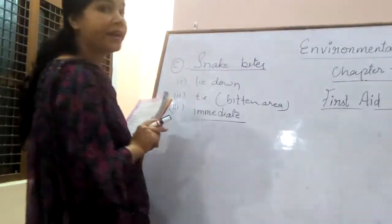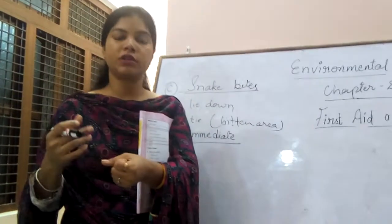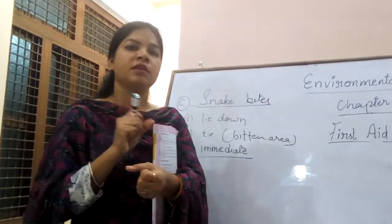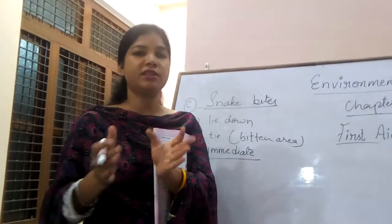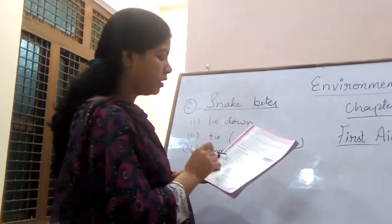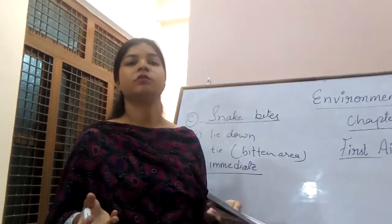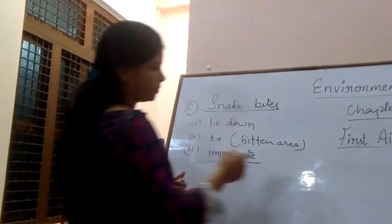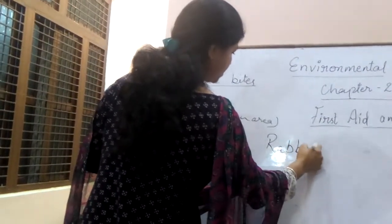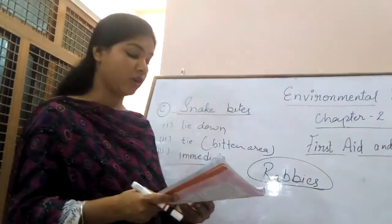What should you do for minor burns? For minor burns, take the burned area under running tap water — cold running water — or apply some ice. Then apply some lotion or antiseptic cream. If the burn is major, take the patient to the doctor.